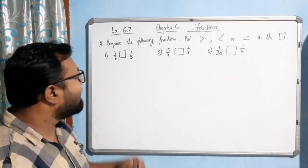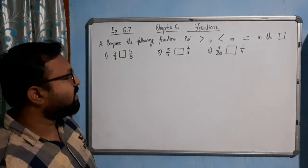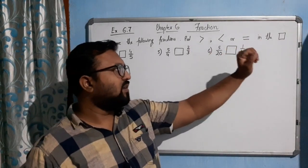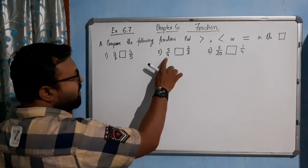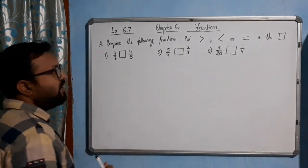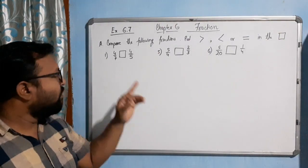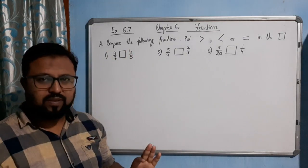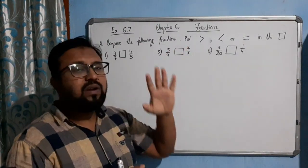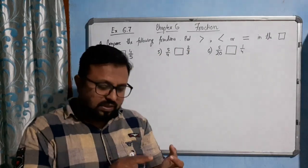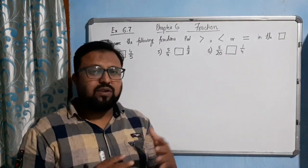Welcome students, now we come to exercise 6.7 of this chapter. The first question asks us to compare fractions and put the correct symbol — greater than, less than, or equal to — in the box. The denominators here are different: 4, 3, 20, and 4. There are three ways of comparing fractions when the denominators are different: when numerators are the same, by LCM, and by cross multiplication.